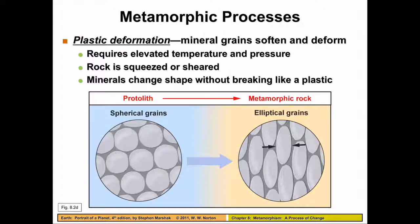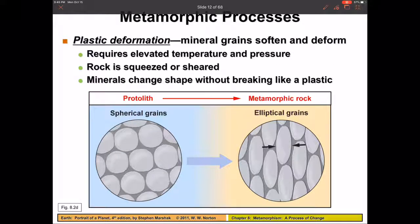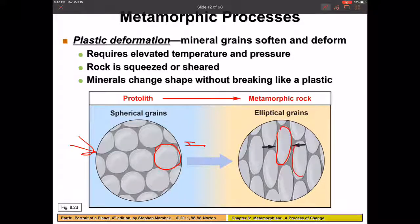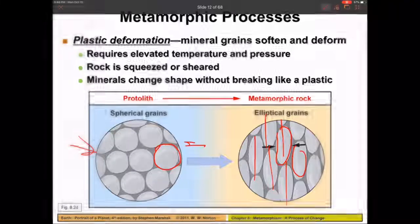With plastic deformation — the second way foliation can form — we start with nice round grains that get squashed. You can see they're now all elongated, and their axes are all in the same direction, again showing the direction of force happening perpendicular to the grains.